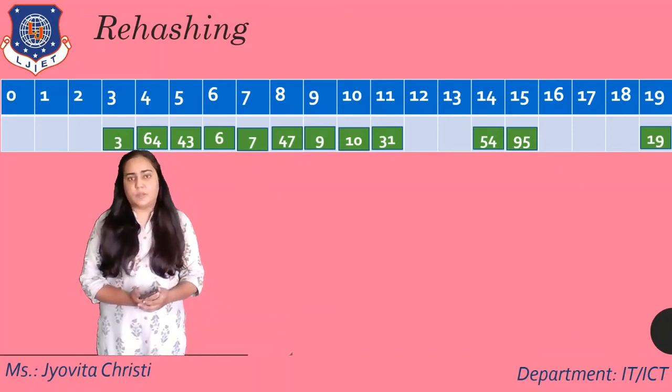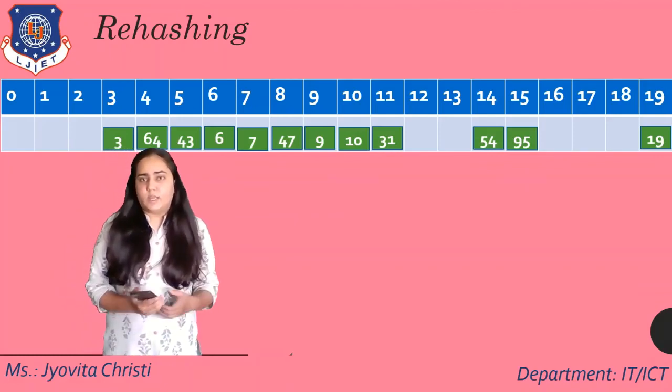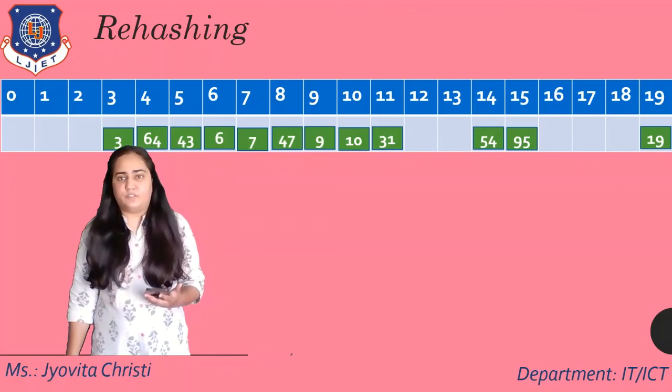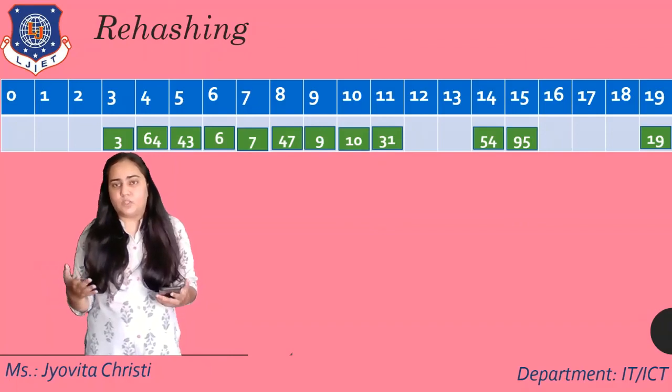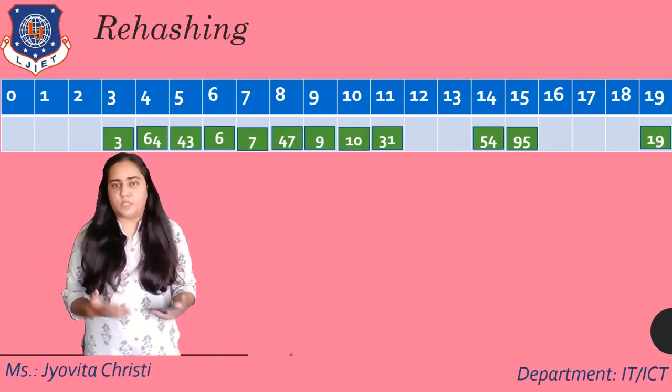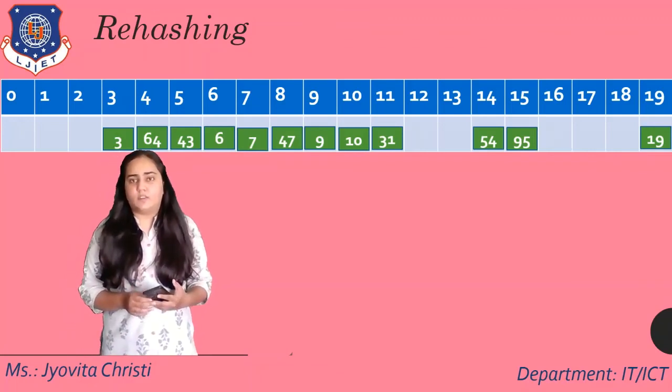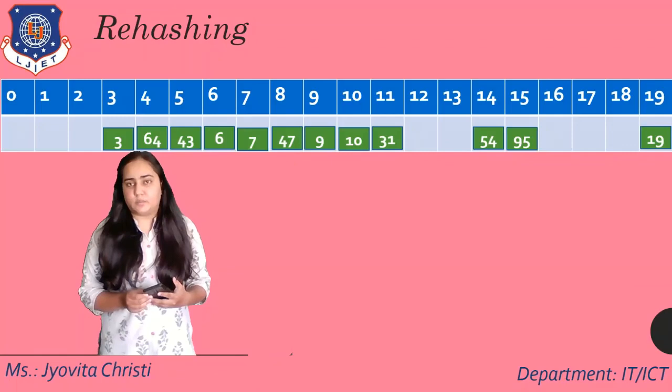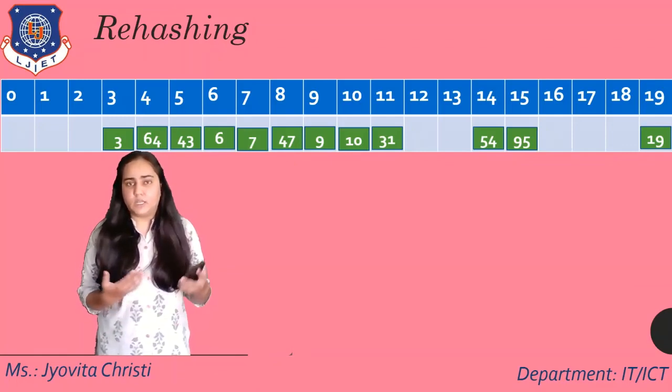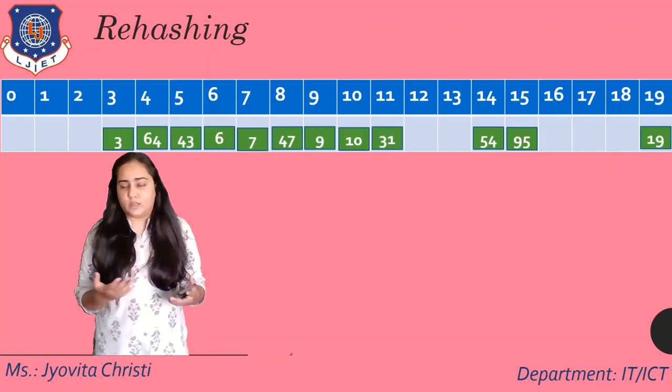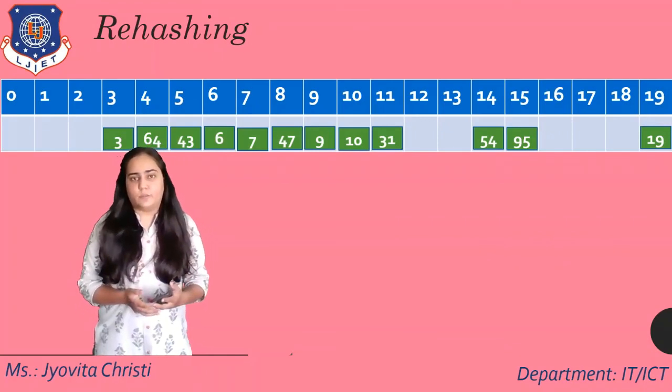Now there were less number of collisions because I did rehashing. And once again, you can see my table is almost half filled. So this would be a time when you would be doing another rehashing where you will make your table size 40 now instead of 20. So this is how hash tables work in practice. And I've shown this to you with very simple examples with a very simple hash function too. In reality, there would be a very complex hash function in order to avoid lots of collisions from happening.